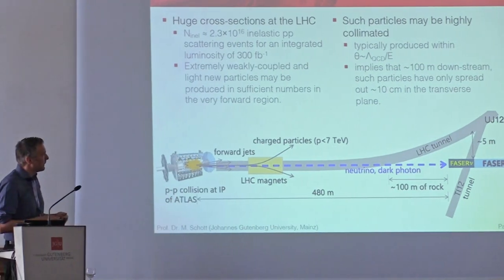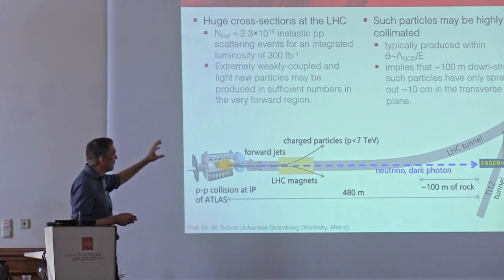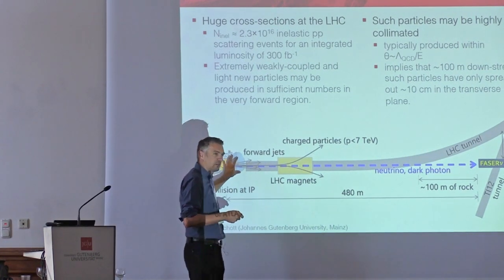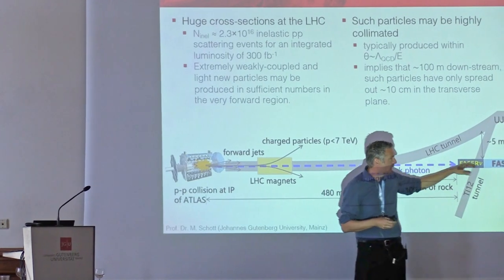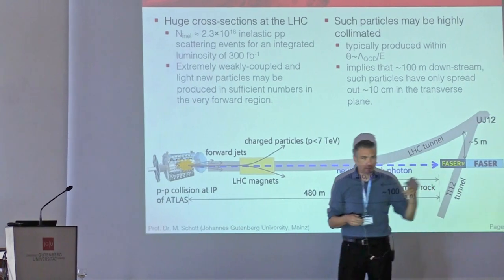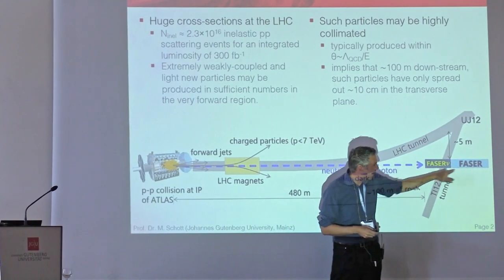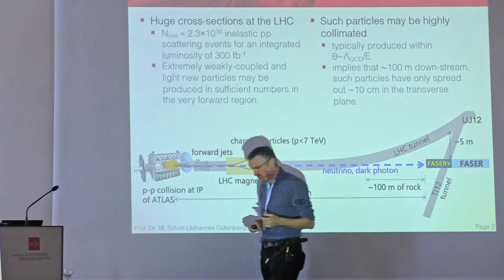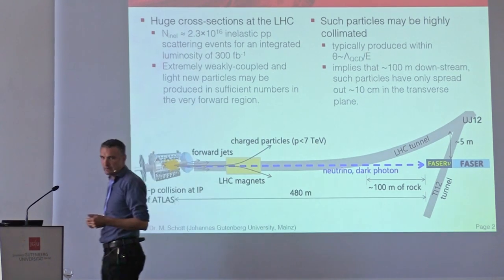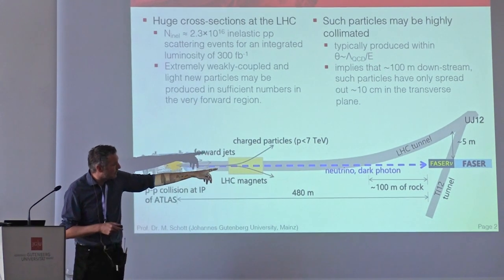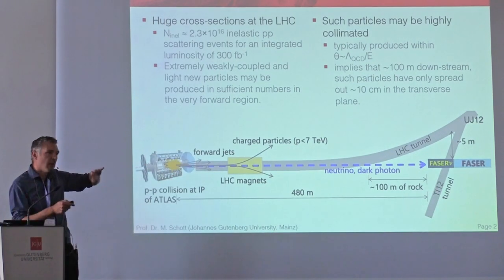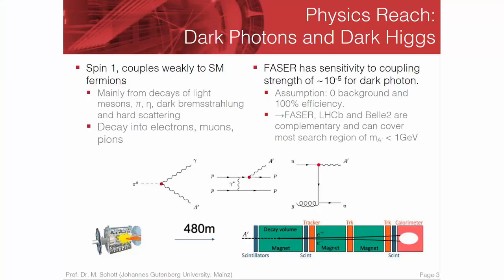The nice thing about this is that we have extremely large cross-sections here. The idea is we look for a light particle decaying in the FASER experiment. The FASER experiment has two parts: FASER-ν, which is a neutrino experiment, as well as FASER. I will talk a little bit about FASER-ν because we already have first results there.